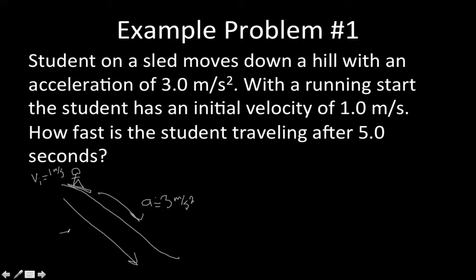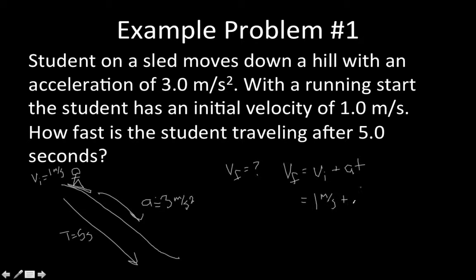So time is going to be five seconds. What is it that we're really trying to find? We want to find the velocity after five seconds — so it's going to be our final velocity. Look at those equations and think: which one solves for final velocity and has initial velocity, acceleration, and time? It's going to be this one: final velocity equals initial velocity plus acceleration multiplied by time. So initial velocity is 1 meter per second, plus acceleration of 3 meters per second squared multiplied by 5 seconds, giving a final velocity of 16 meters per second.